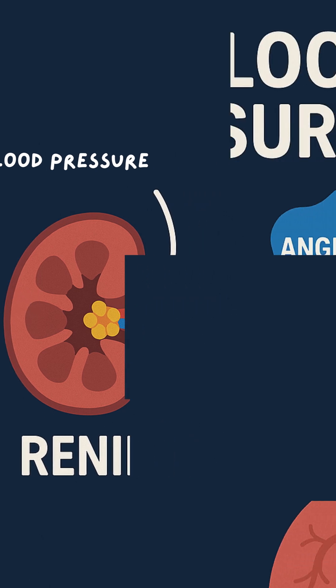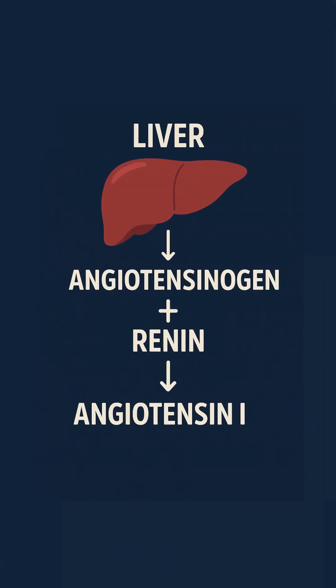Renin then encounters a protein produced by the liver called angiotensinogen. Renin cleaves this molecule to form angiotensin 1.